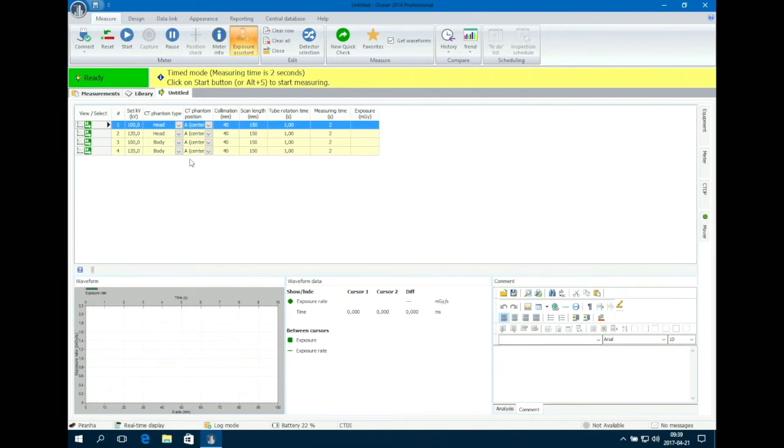Now select your CT phantom type in the drop down menu. In this case a body phantom. Enter the following information from CT console into Ocean. Set KV.